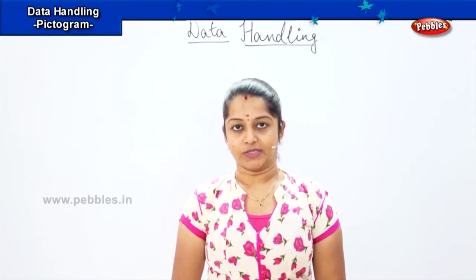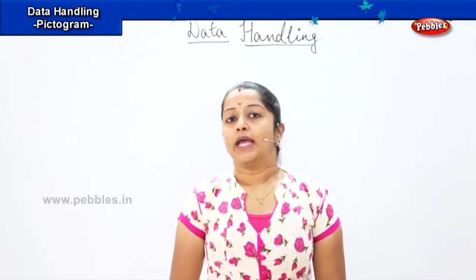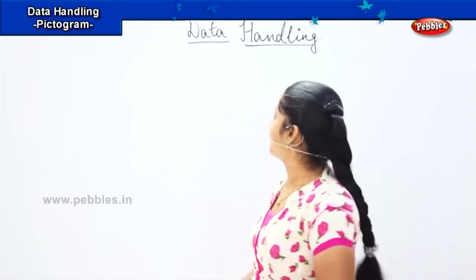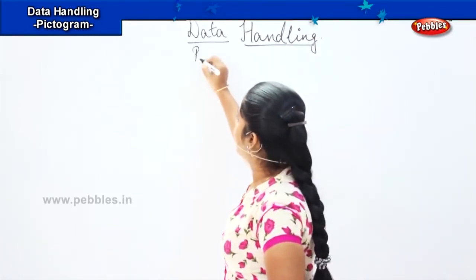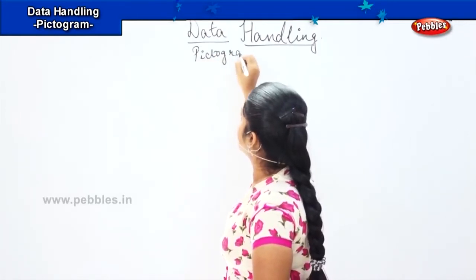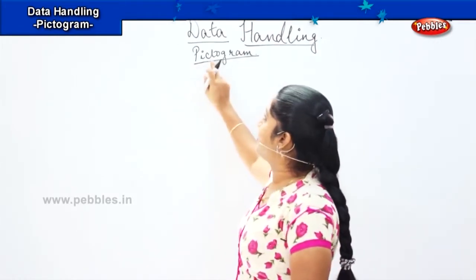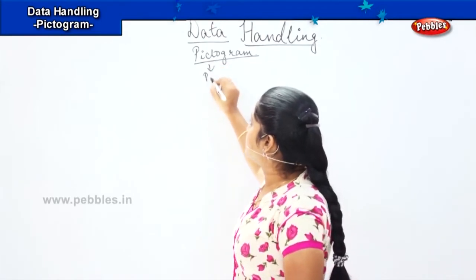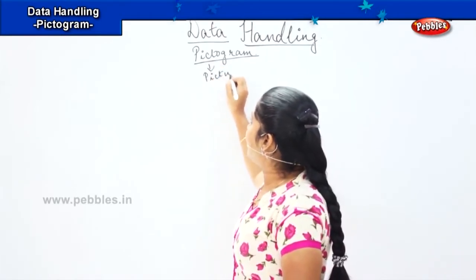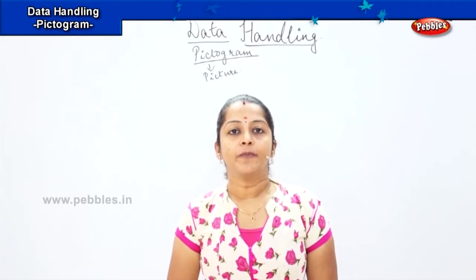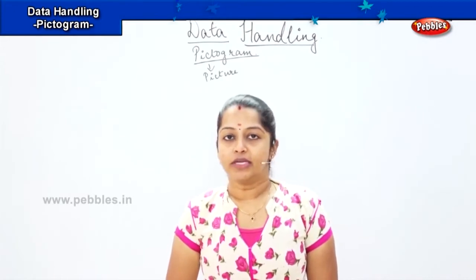So children, we learnt a lot about how to solve questions using the tally method. Now the next thing we are going to learn is the pictogram. So what do you mean by the term pictogram? As the name suggests, it refers to pictures. Picto means picture. So the data will be given to you in the form of pictures, and based on those pictures we need to find findings and solve the questions.